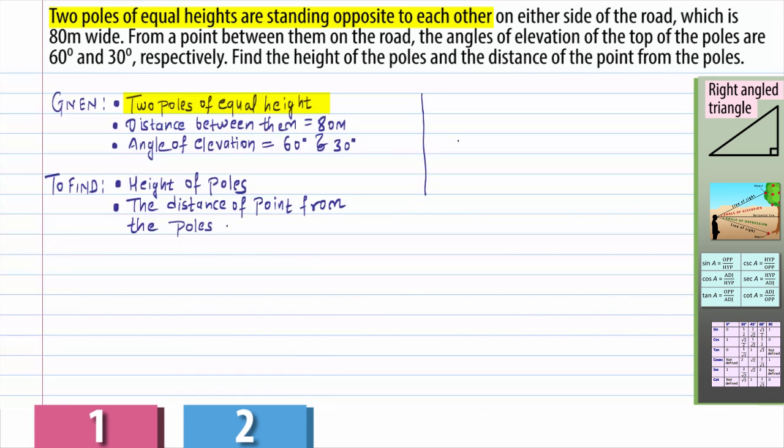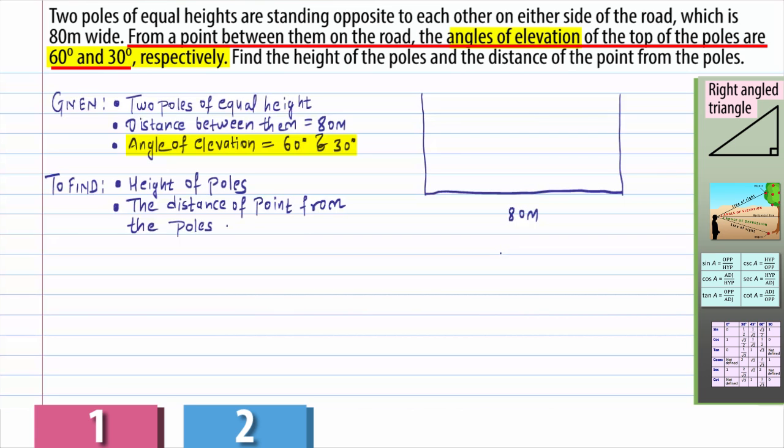So it is given that there are two poles, which are of equal height, standing opposite, and the distance between these two poles is given as 80 meters. Now, next it says that from a point between them on the road, the angles of elevation of the top of the poles are 60 degrees and 30 degrees respectively. That means I should take that point in between these two poles. So let me take that point here.